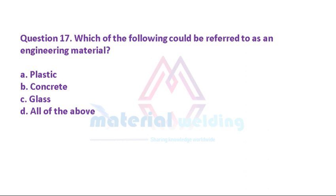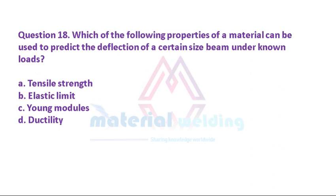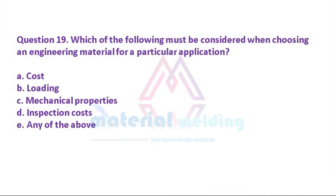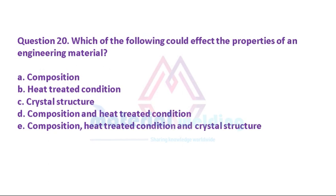Question 18: Which of the following properties of a material can be used to predict the deflection of a certain size beam under known loads? A. Tensile strength. B. Elastic limit. C. Young's modulus. D. Ductility. Question 19: Which of the following must be considered when choosing an engineering material for a particular application? A. Cost. B. Loading. C. Mechanical properties. D. Inspection costs. E. Any of the above. Question 20: Which of the following could affect the properties of an engineering material? A. Composition. B. Heat-treated condition. C. Crystal structure. D. Composition and heat-treated condition. E. Composition, heat-treated condition, and crystal structure.